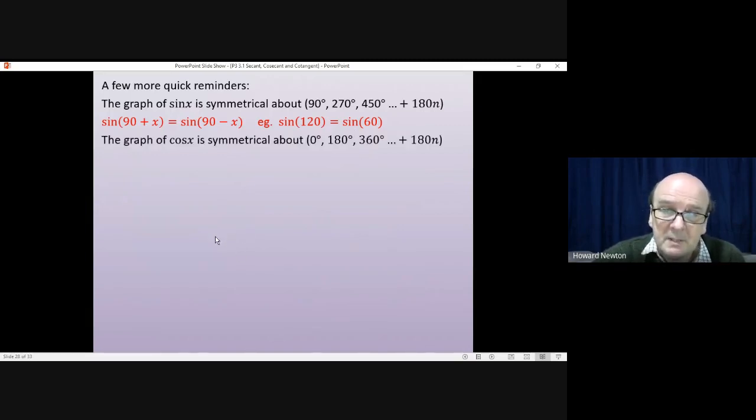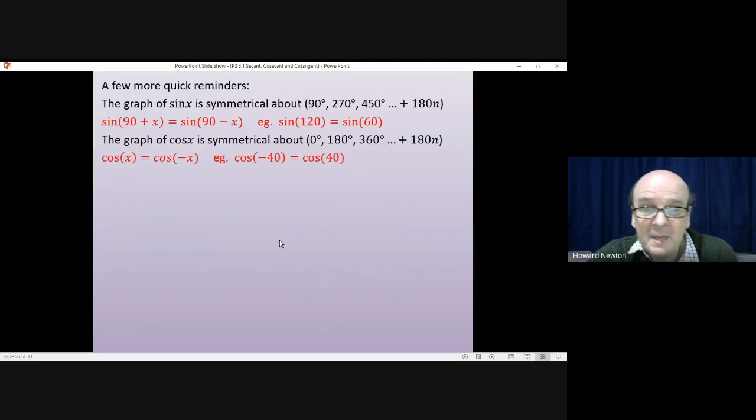With cosine, it's symmetrical around 0, 180, 360. Keep on adding on multiples of 180. What that means is, working around 0, for instance, the cosine of x and the cosine of minus x, they're exactly the same as each other. Cos 40, cos minus 40, for example. They are the same.